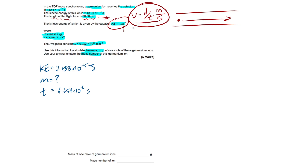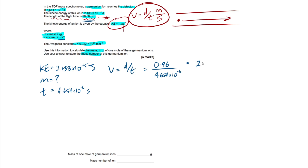So I'm going to do velocity equals distance over time. The distance is 96 centimeters, but we convert that to 0.96 meters, since our velocity units must be in meters per second. Divided by the time of 4.654 × 10⁻⁶ seconds. Plugging that into your calculator, you get 206,274.1728 meters per second — a crazy fast number!